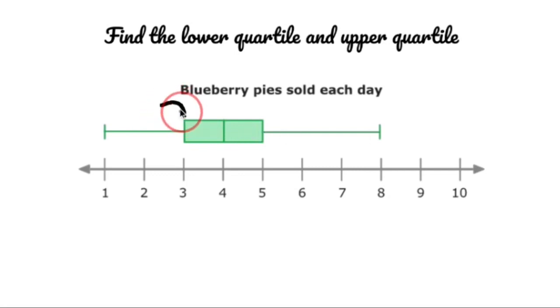The lower quartile is the part all the way to the left of the box, so I'll call that LQ. And the upper quartile is the part all the way to the right of the box, I'll call that UQ.